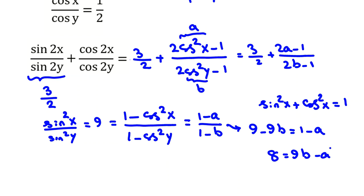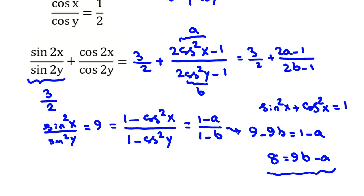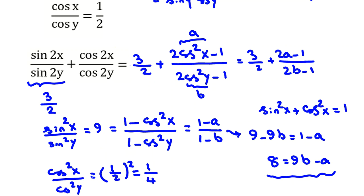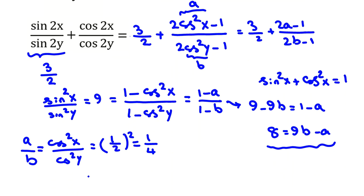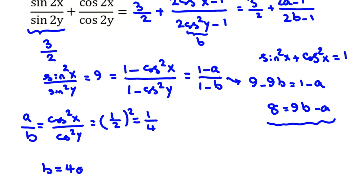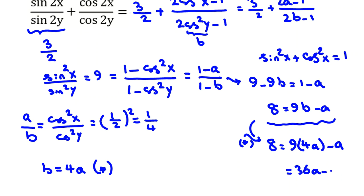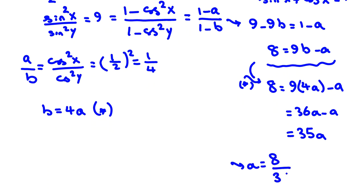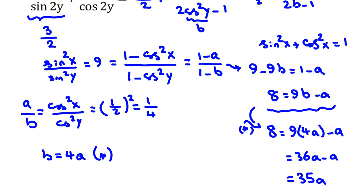From cosine x over cosine y equals 1 over 2, squaring gives cosine squared x over cosine squared y equals 1 over 4, so A over B equals 1 over 4, meaning B equals 4A. Substituting into 8 equals 9B minus A: 8 equals 9 times 4A minus A, which is 36A minus A, equals 35A. So A equals 8 over 35, and B equals 4A equals 32 over 35.